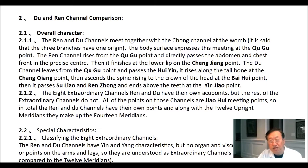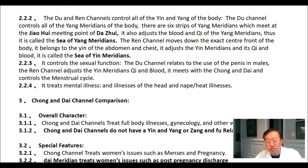Special characteristics classifying the 8 extraordinary channels: the ren and du channels have yin and yang characteristics, but no organ and viscera relationships, or points on the arms and legs, so they are understood as extraordinary channels — unusual as compared to the 12 meridians. The du and ren channels control all of the yin and yang of the body. The du channel controls all of the yang meridians of the body; 6 strips of yang meridians meet at the jiao hui point — the meeting point of da jui — and it adjusts the blood and qi of the yang meridians. Thus, it is called the xi of yang meridians.